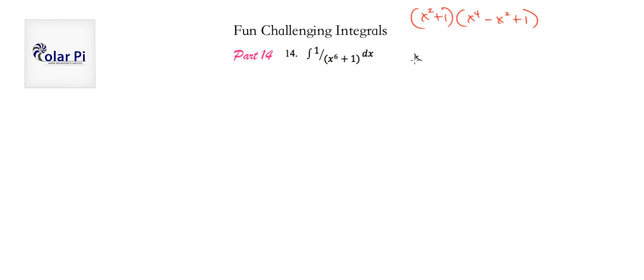I could write in place of x to the 4th minus x squared plus 1, I could write x to the 4th plus 2x squared plus 1 minus 3x squared. Why does this suit me to do that? Because this is a perfect square. That's why I want that. And they're the same because this guy and this guy combine to that, and everything else is the same in both.